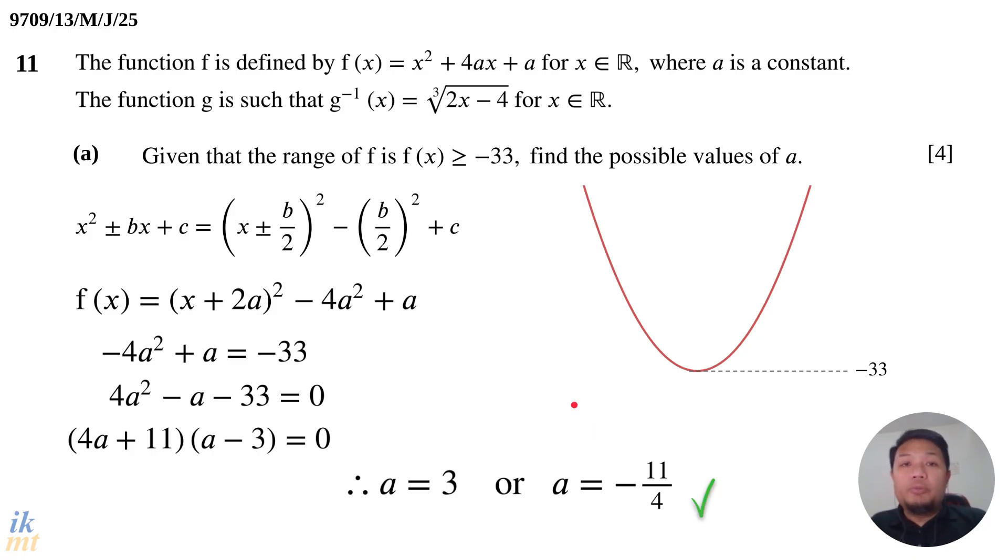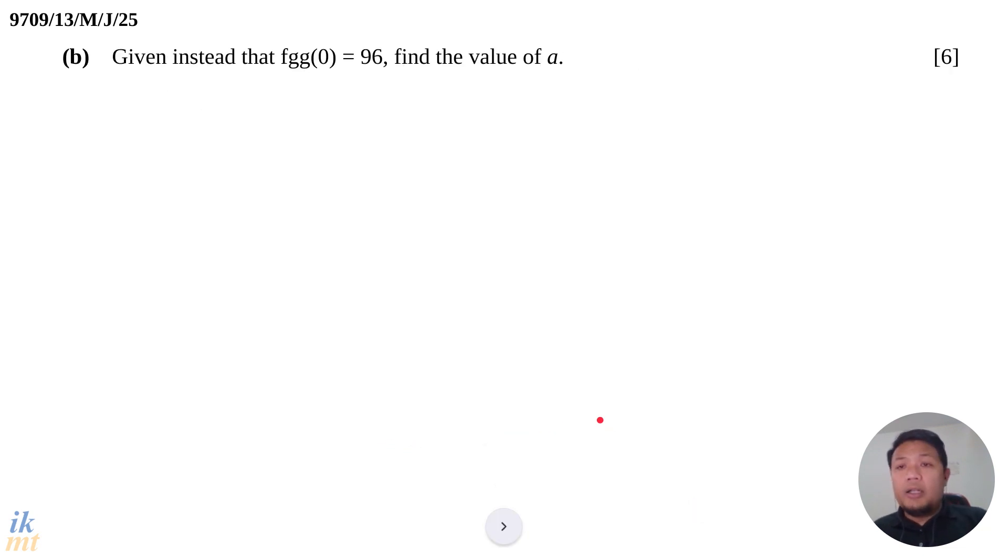So then let's move on to part B. Part A is, I think, not so hard. As long as you know how to do completed square form, all the work here will be quite simple. So part B, now given instead, when they say the word instead here, that's a keyword there. When you see the word instead, that means whatever you have found before will not be used. Whatever value of a that you have found before will not be used. So it's sort of like a reset. So here, given instead that FGG0 is 96, find the value of a.